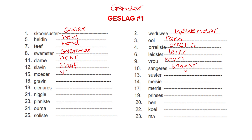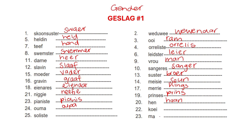Moeder and vader. Suster and broer — these are the easy ones. Gravin and graaf. Meid and seun. Eienares — that's a woman owner — and eienaar. A merrie is a hings. Niggie is a neef. Prinses and prins. Pianiste and pianis. Hen and haan. Ouma and oupa. Koei and bul. Soliste is solis. And ma is pa.